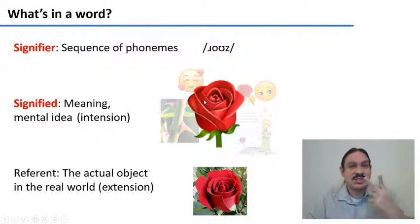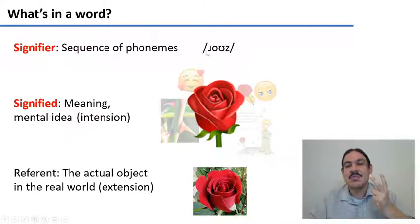So the word rose has two parts: the sequence of phonemes that you use to produce it and the mental images that are evoked when you say rose.